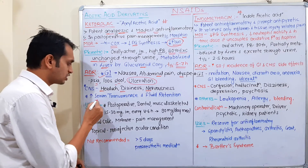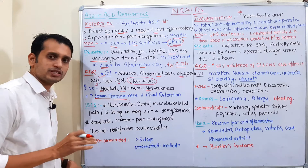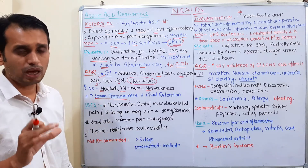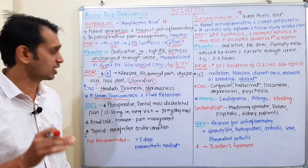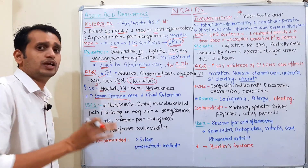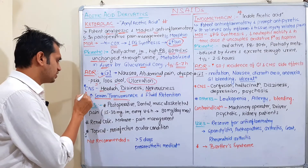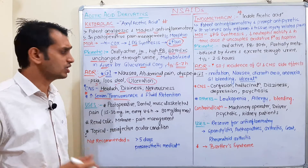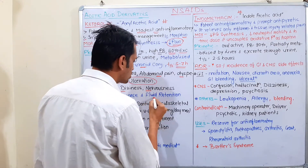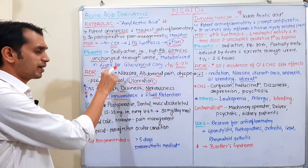Ketorolac may also enhance serum transaminases, which means it can damage the liver. Serum transaminase enzymes are biomarkers for liver disease — in liver damage conditions, serum transaminase levels increase in the blood. Additionally, ketorolac may cause fluid retention and edema.